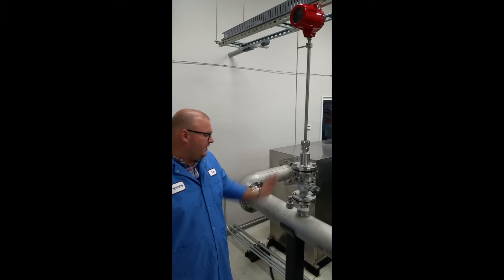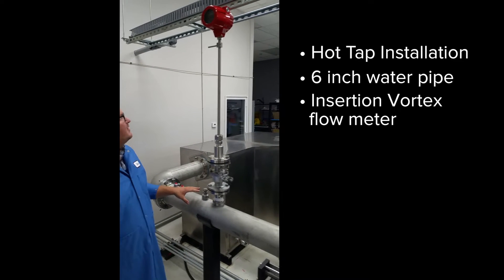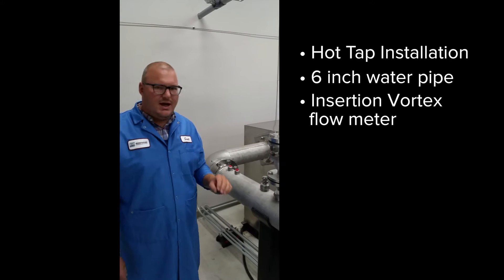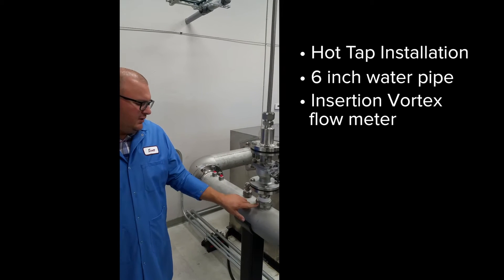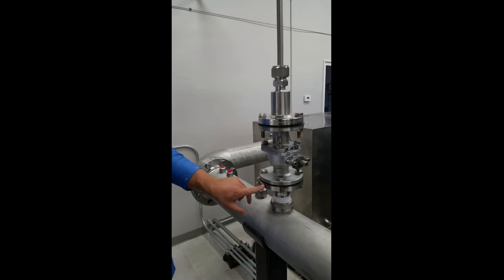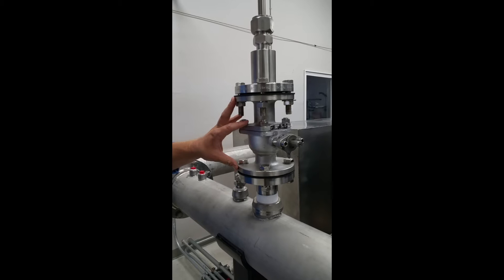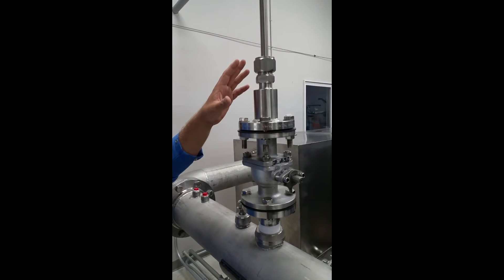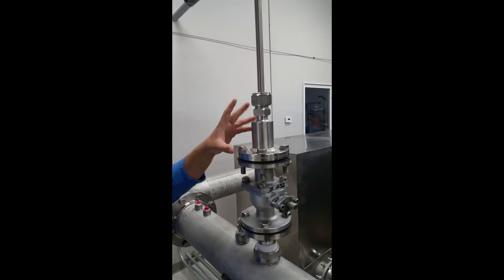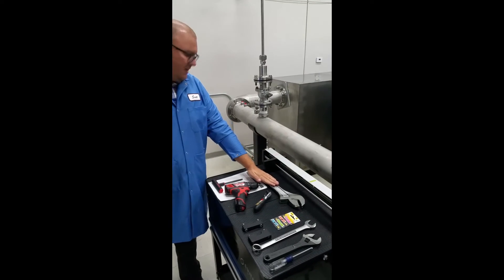We're here today on a 6 inch schedule 40 pipe with water coming through. This would be a typical hot tap installation. This weldlet's been welded into the pipe. We added a 2 inch flange adapter. This is a 2 inch isolation ball valve. And then we have our 241i insertion meter with a packing gland, 2 inch flange packing gland adapter.